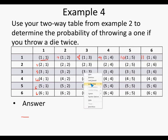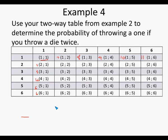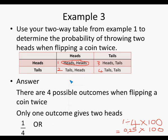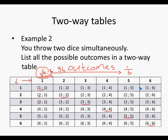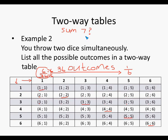Let's do one more example. The question is: what is the probability of throwing a sum of 7 when throwing 2 dice simultaneously? Sum means adding the two numbers together to get 7. Let's see: 1 plus 1 is 2, 2 plus 1 is 3, 3 plus 1 is 4, 4 plus 1 is 5, 5 plus 1 is 6, and 6 plus 1 is 7. So that is one way to get a sum of 7.